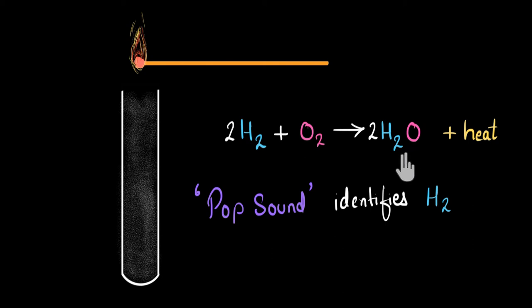And we have seen earlier that combination reactions in general are exothermic. They give out heat. In fact, this reaction gives out a lot of heat. A lot of heat is being generated. And this heat heats up the air that is inside this test tube. And this heated up air, it starts expanding very rapidly.